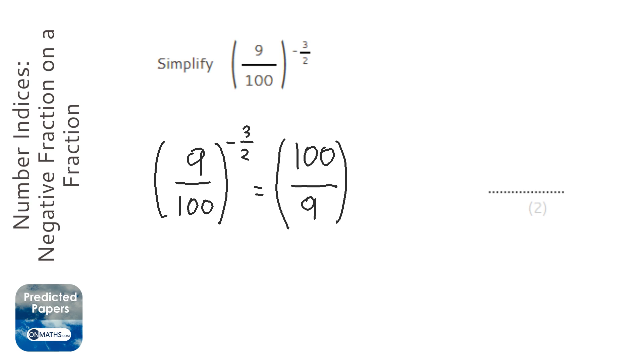When I've done that, I can just get rid of the negative. Next bit, that 2 at the bottom means I just need to square root both the numbers, the top and the bottom of the fraction. So 100 becomes 10, and 9 becomes 3.